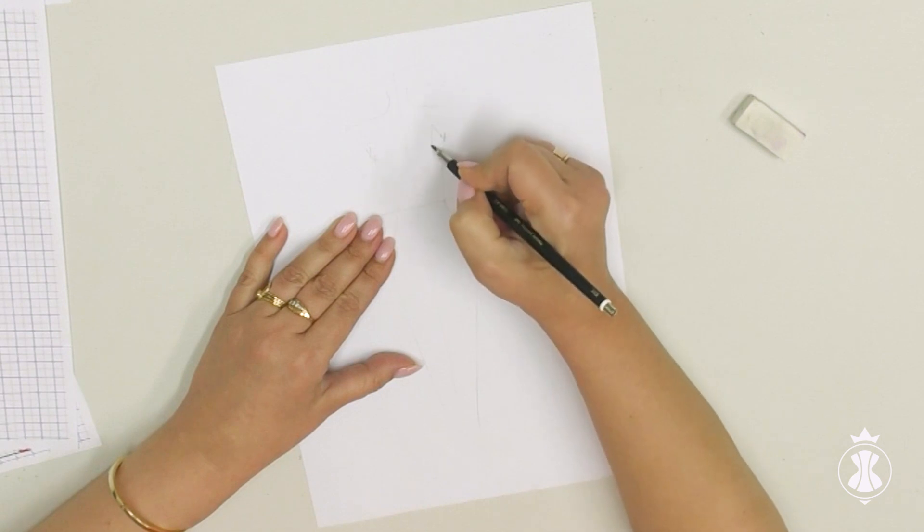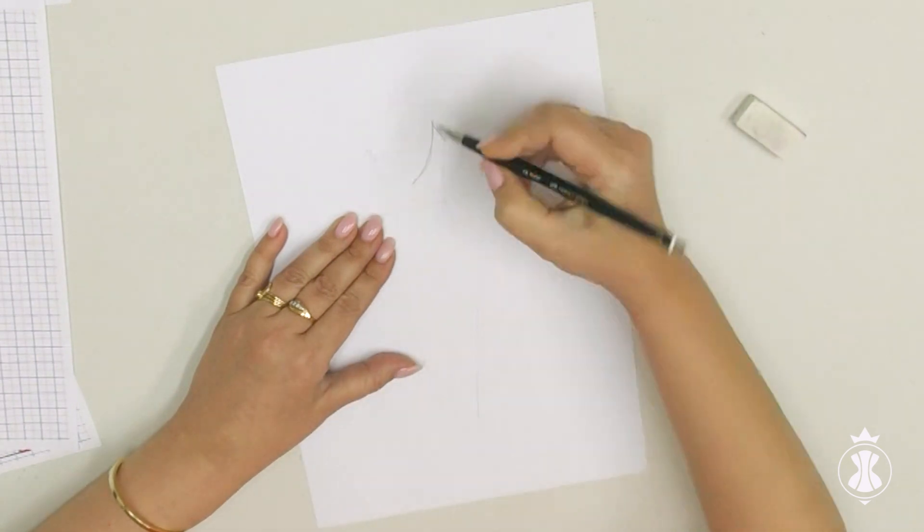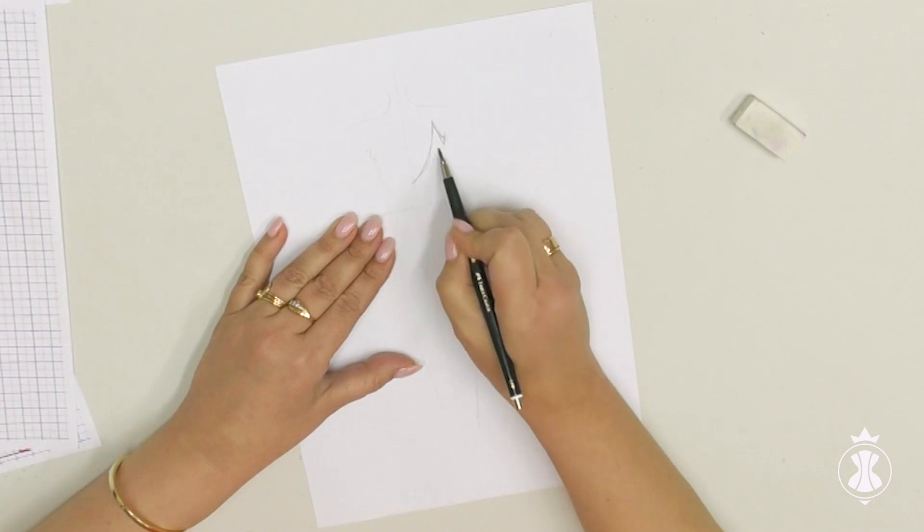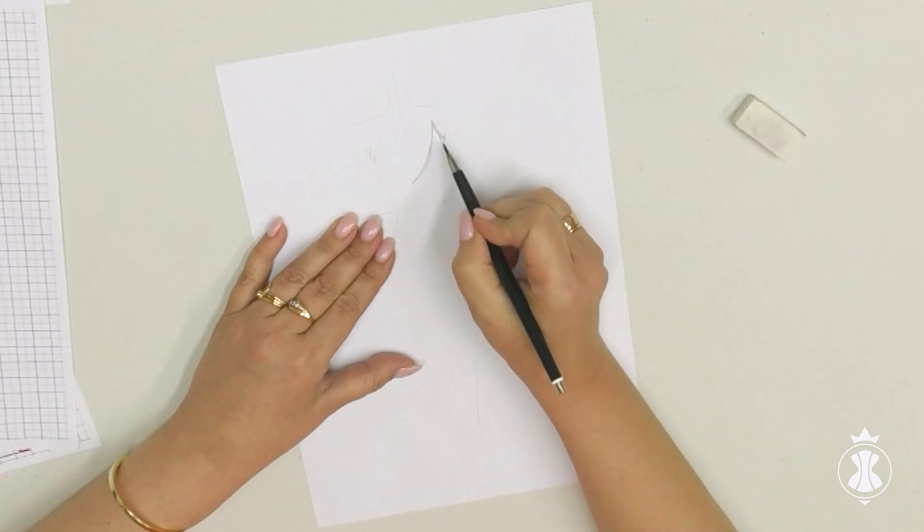Many women want to hide this area and at the same time they want to have an open back. The best solution is the option of the open back with a corner. This additional element will not only cover the problematic area on the back, but flatten it.